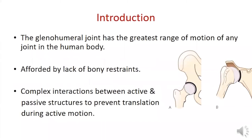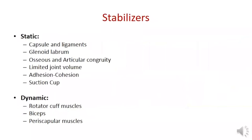The shoulder joint has the greatest range of motion of any joint in the human body, which is afforded by lack of bony strength, so it is inherently unstable. Shoulder stability is maintained by complex interactions between static and dynamic stabilizers to prevent translation of the joint during motion.